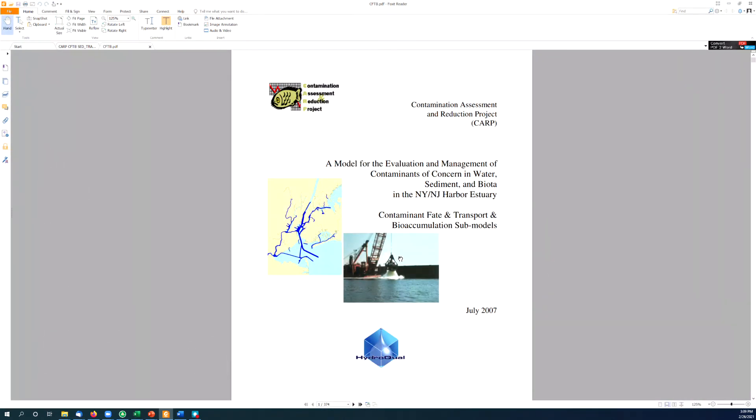And so these are the K_POC, which is basically the same thing as K_OC, K_OC values for the PCB homologues that were considered in the CARP model. And also they've given their K_OW values here. And just to prove to you that I'm not making this stuff up, this comes from this contamination assessment and reduction project model for the evaluation and management of contaminants of concern in water sediment and biota in the New York, New Jersey harbor estuary. This report that I'm getting the numbers out of is from July 2007. Right now, in 2021, I'm working with the Hudson River Foundation on redoing, revamping this model to account for all the changes that have happened since 2007.